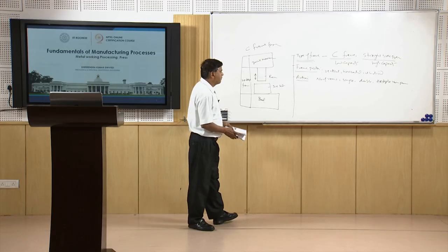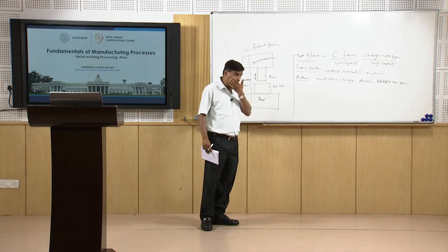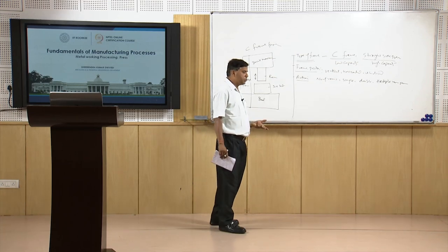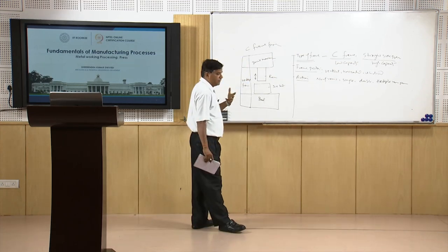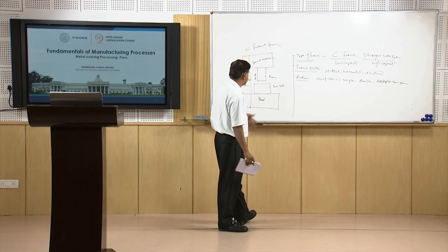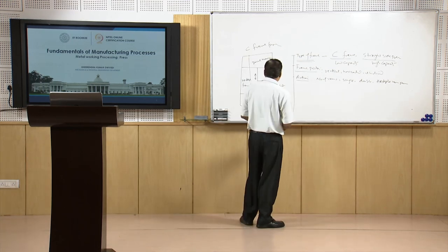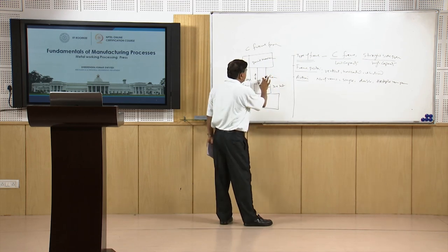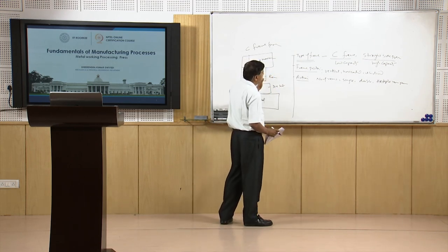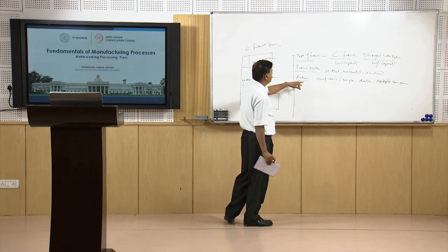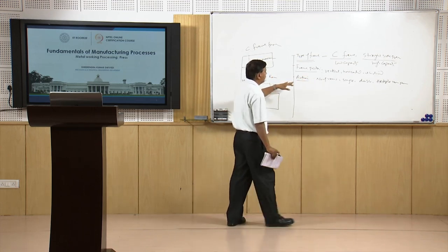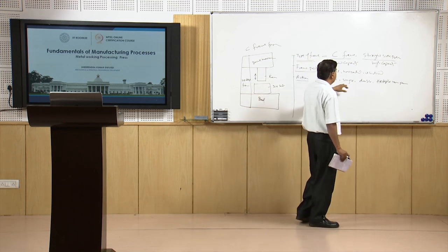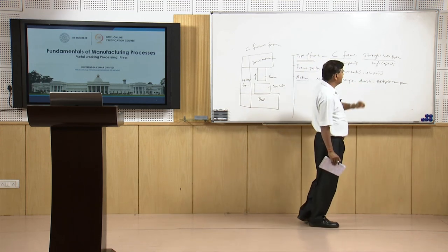The ram movement helps apply force in a controlled way through the die set onto the sheet metal to achieve desired processing — which may be shearing, punching, blanking, nibbling, notching, embossing, or coining. Classification based on action refers to the number of rams: single action has one ram, double action has two rams, and triple action has three rams.